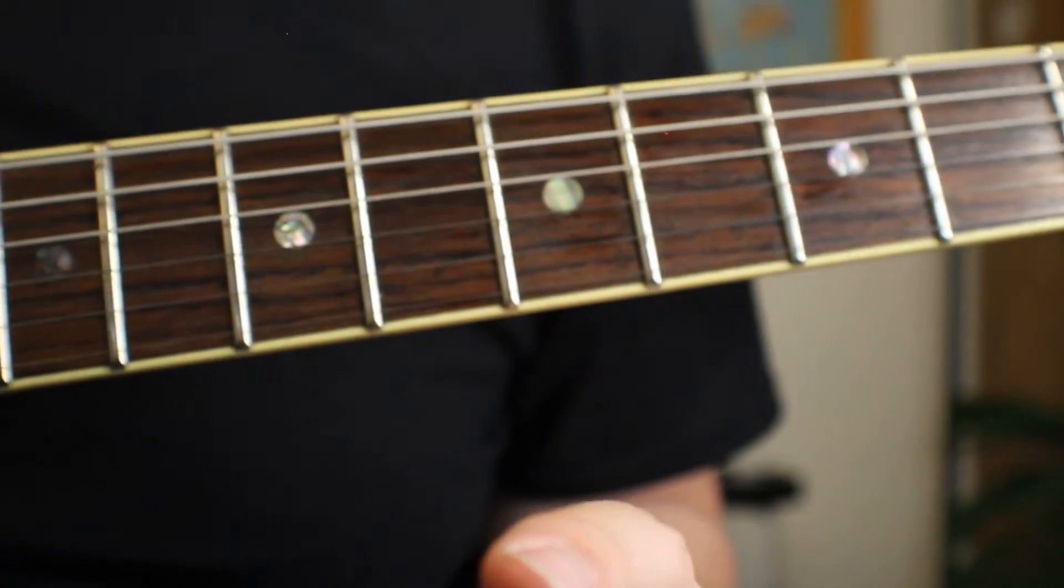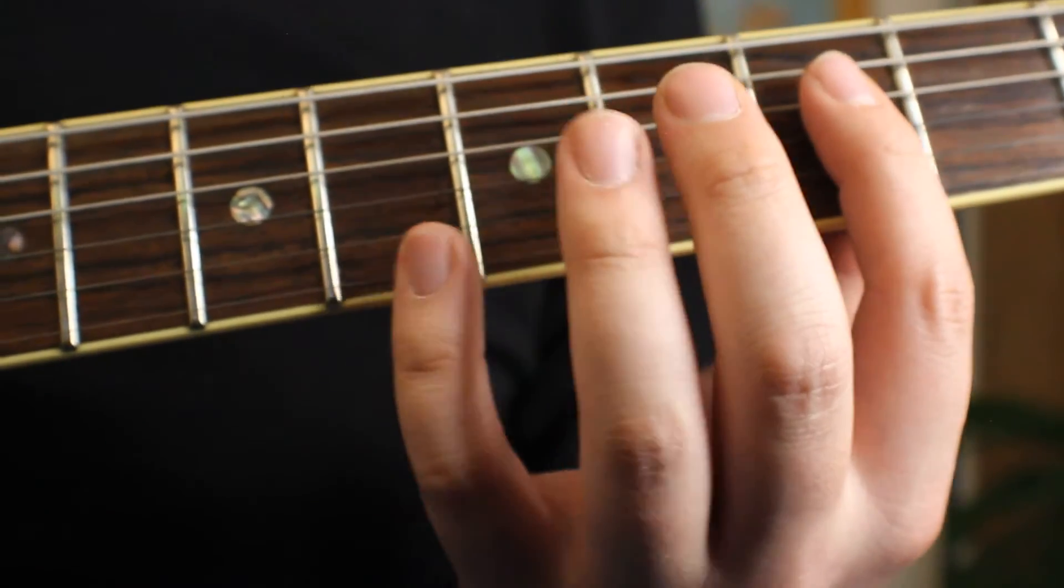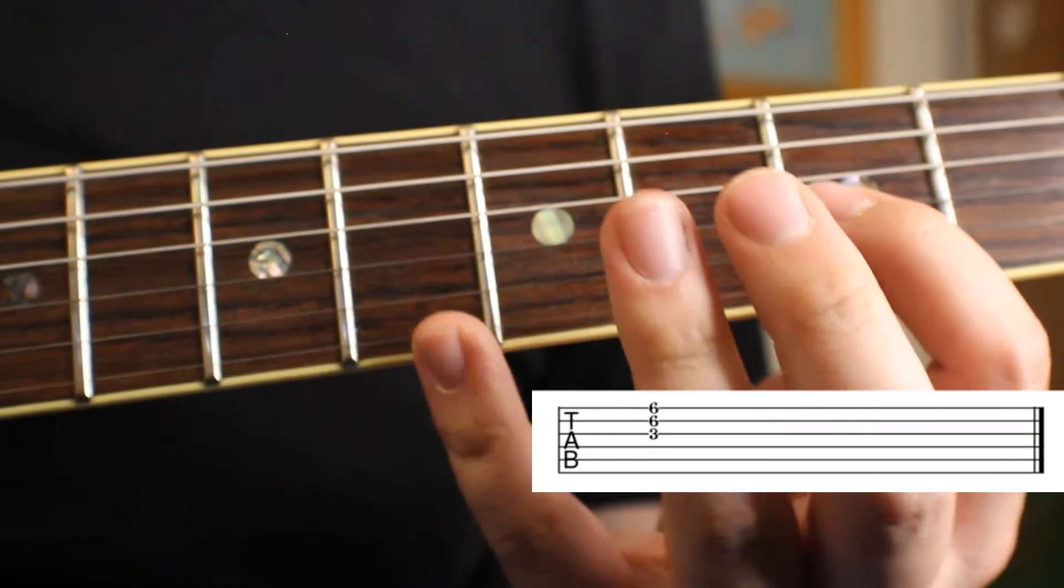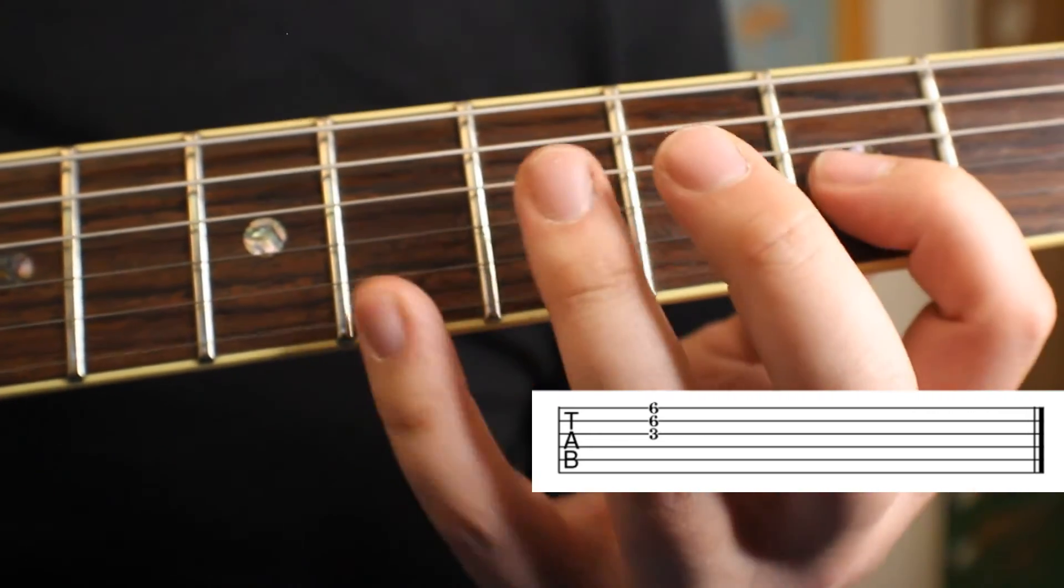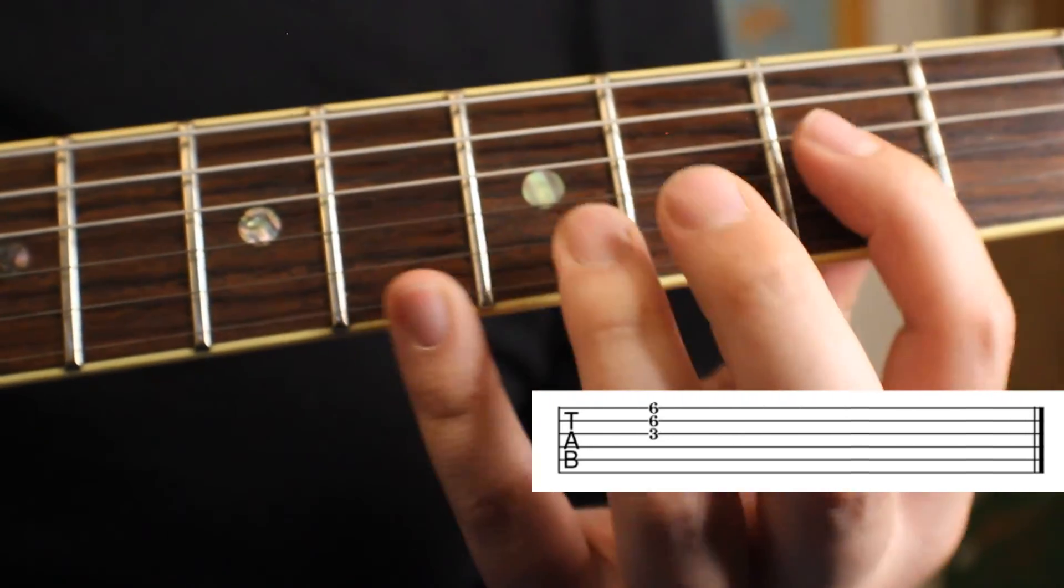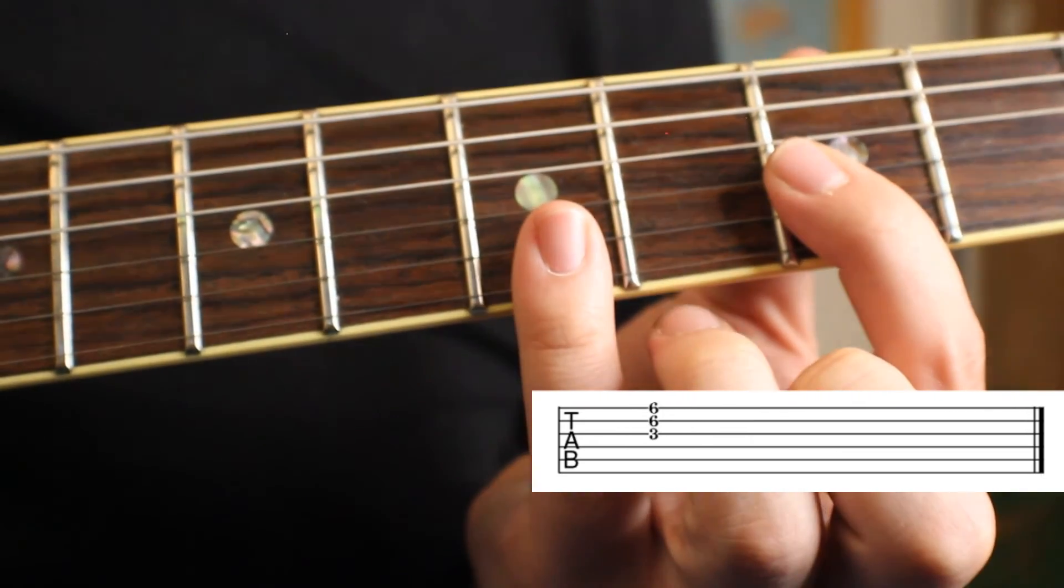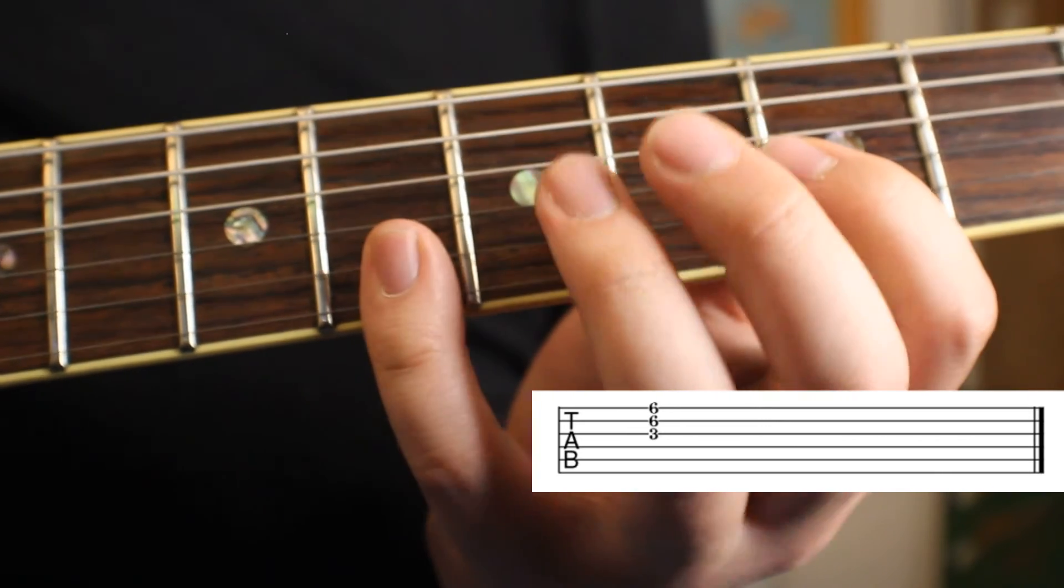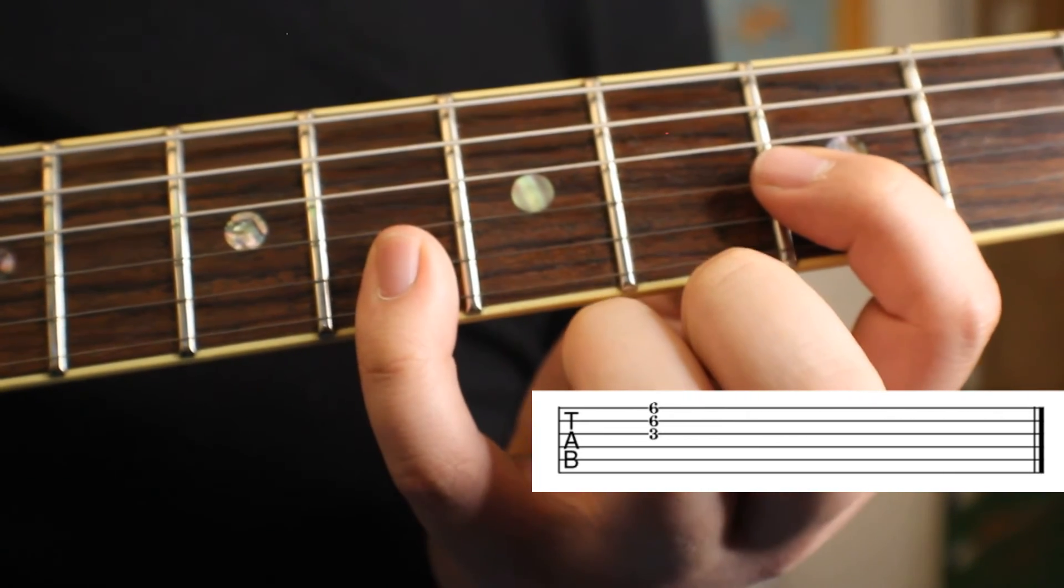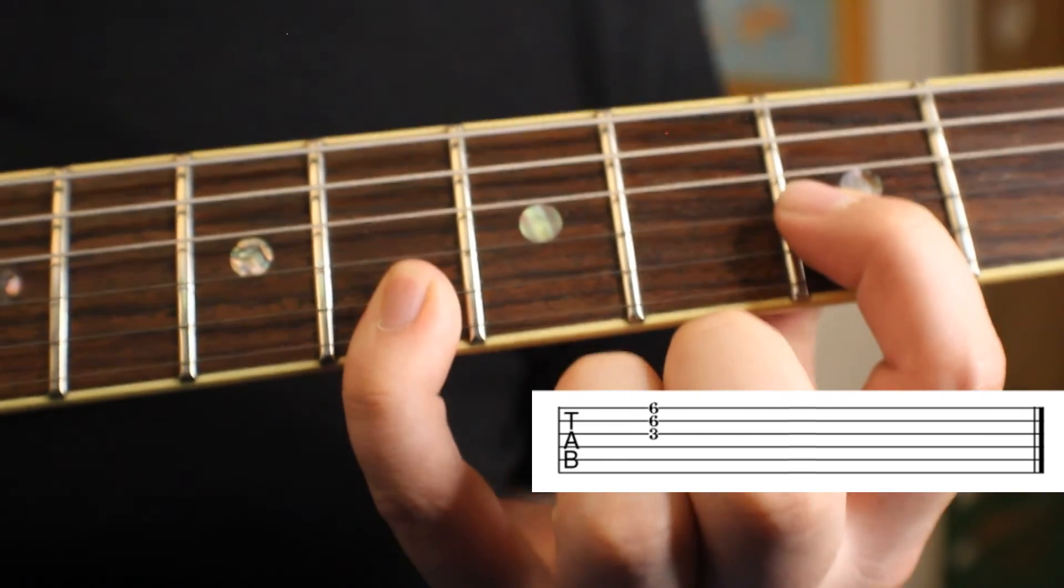This last position involves moving up one last time up the strings. Rest your pointer finger on the G string, and then I like to bar with my pinky. Either way is fine – you can stretch if you want to. This one we're going to stretch over again because of the way the guitar is tuned. Pointer finger and then your pinky barred across those two.